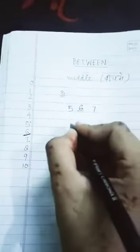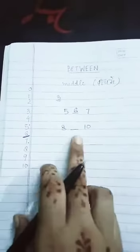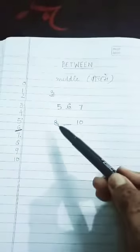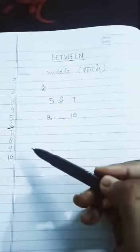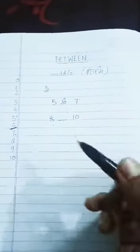Let's take another example. Suppose we are having eight, dash, and ten. And we are asked to find the number in between eight and ten. We will again see the number line or count in our mind.